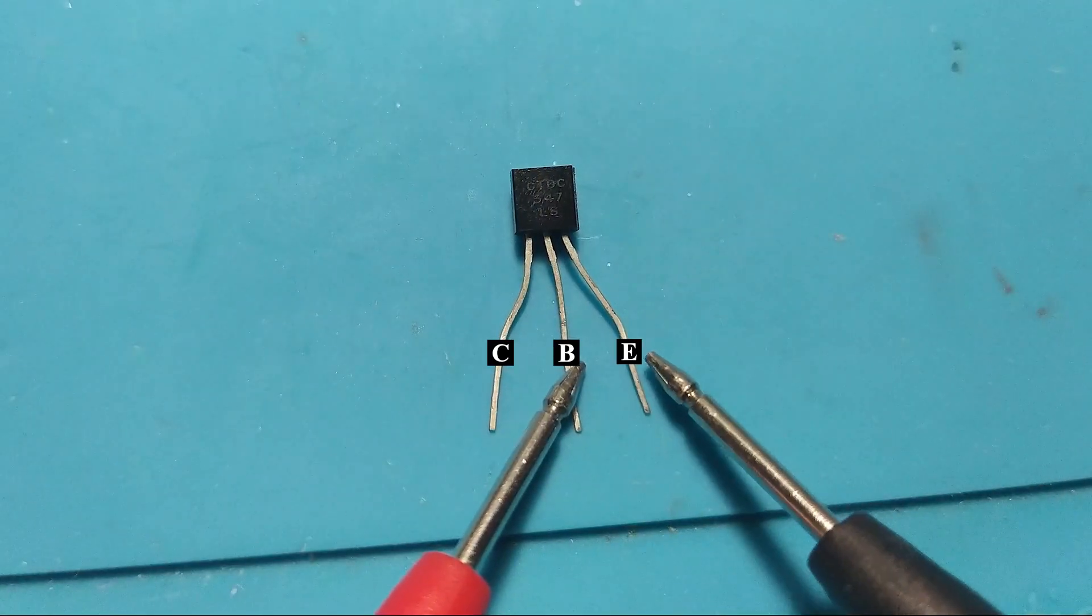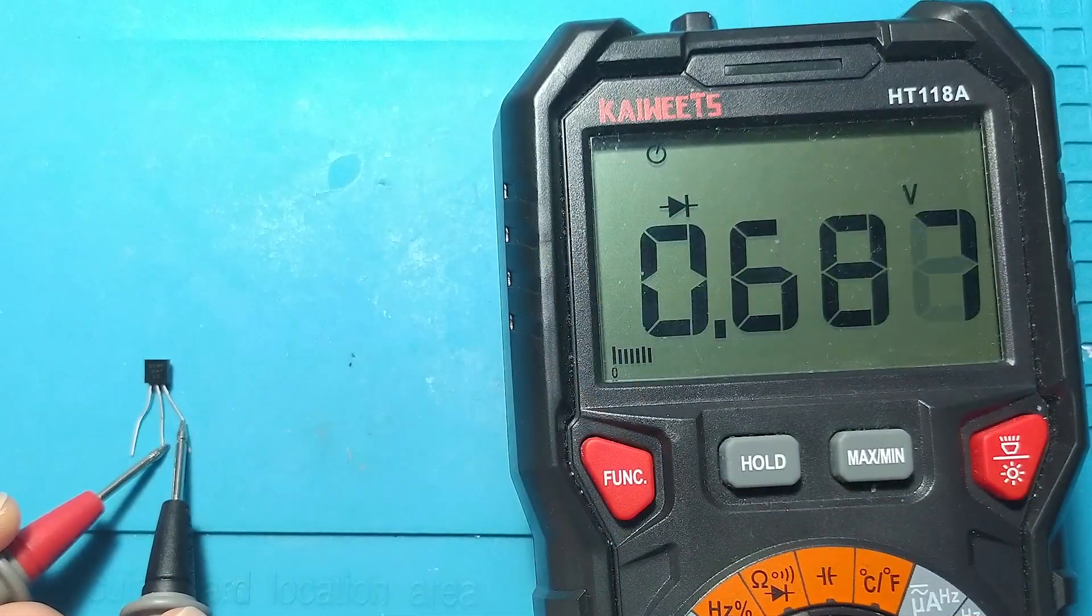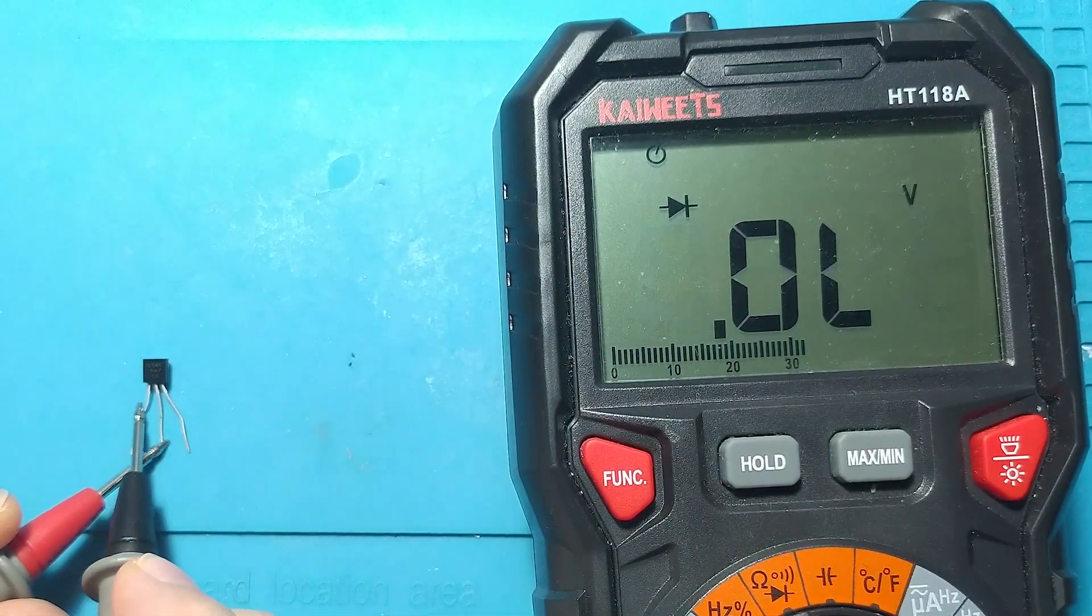With the red probe on the base and the black probe on the emitter or collector, should have a voltage drop of about 600 to 700 millivolts.